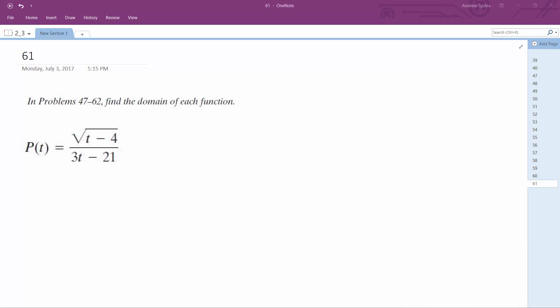Getting a little more complicated here. For this one, the difference is that for the numerator, t minus 4 has to be greater than or equal to 0.